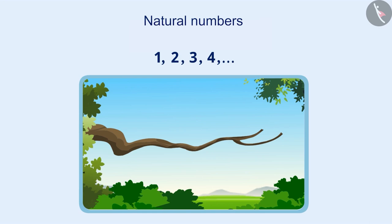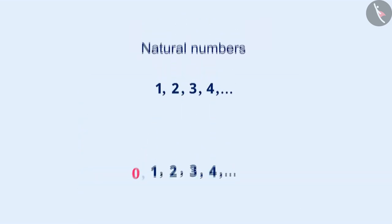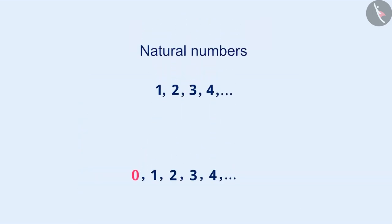Such a number is expressed as 0 in mathematics. Therefore, if we add 0 to the natural numbers, we get the collection of whole numbers.